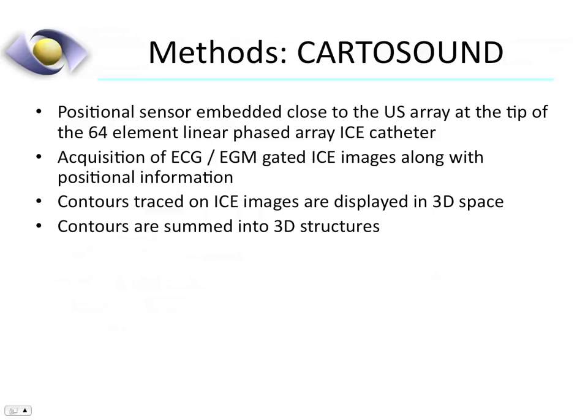This brings us to CartoSound technology. CartoSound involves the use of an intracardiac echo catheter with a positional sensor embedded close to the ultrasound array, whereby one can acquire ECG or electrogram-gated intracardiac echo images along with positional information for each image. Contours traced on intracardiac echo images are then displayed in 3D space and summed into 3D structures.